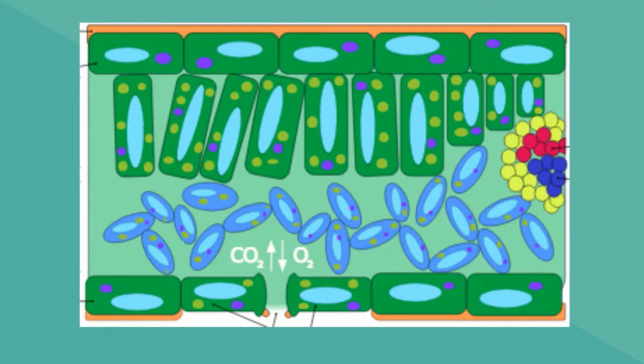Running through a leaf you have the transportation systems of xylem which carry water from the roots and phloem which carries the food made during photosynthesis to the rest of the plant.